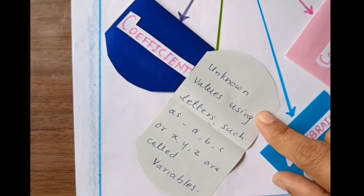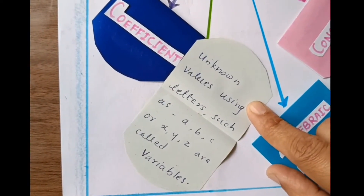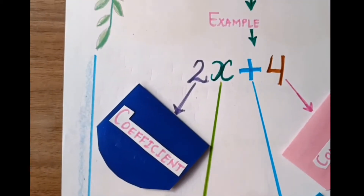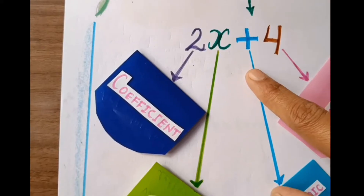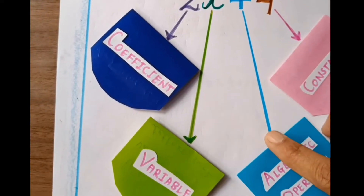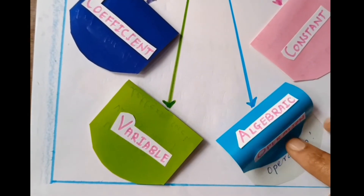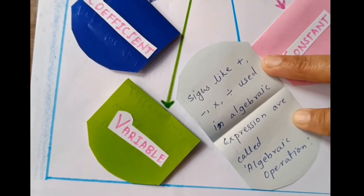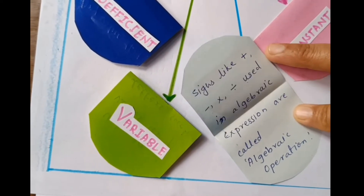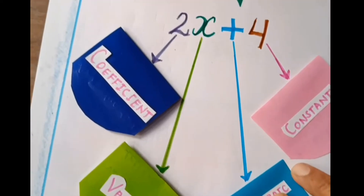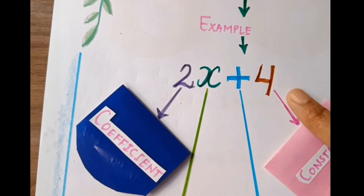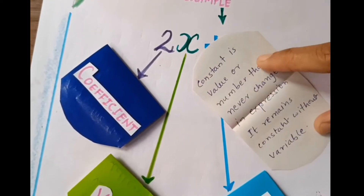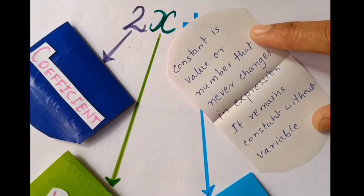Here is the definition of variable. X is variable. And plus is algebraic operation. Here is the meaning. Then 4. 4 is constant. Here is the meaning.